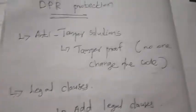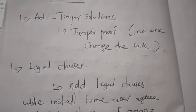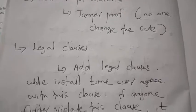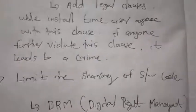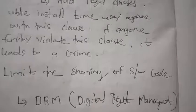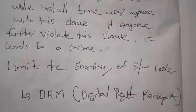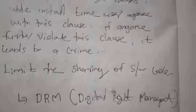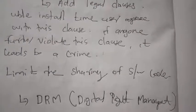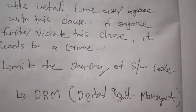These are the three ways to protect your digital property: first, anti-tamper solutions to make your software tamper-proof; second, adding a legal clause; third, using DRM — Digital Rights Management. Today we studied digital property rights, what are the threats to digital property, and how to protect our digital property rights.